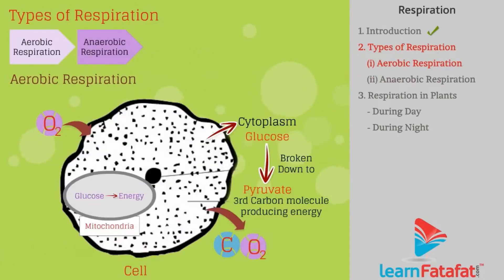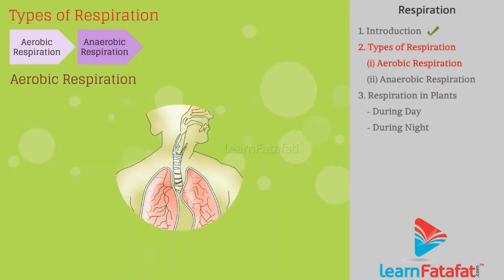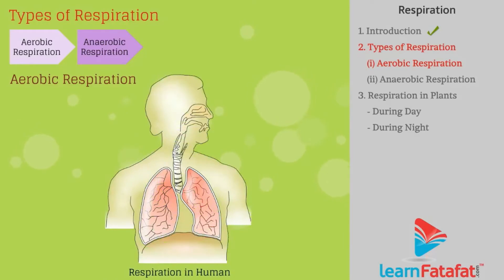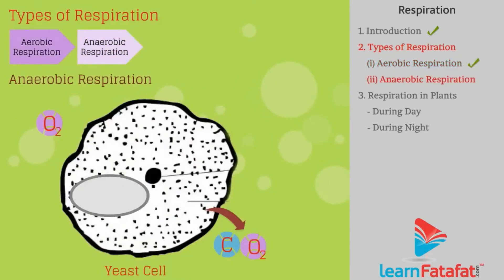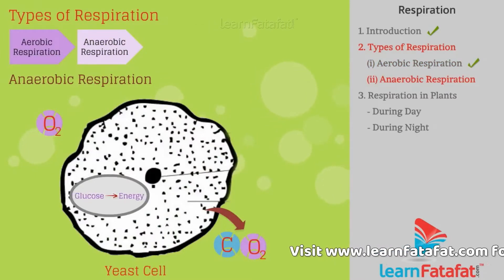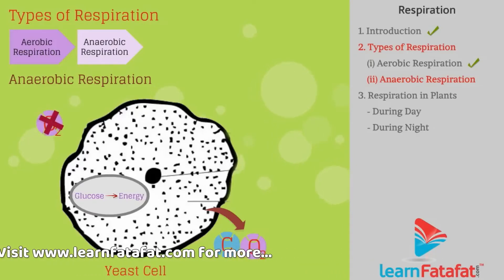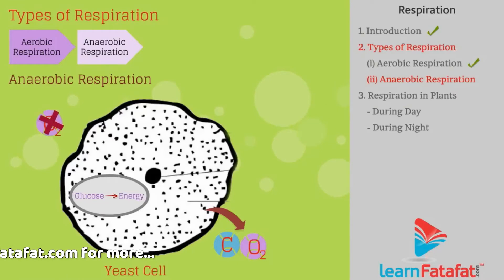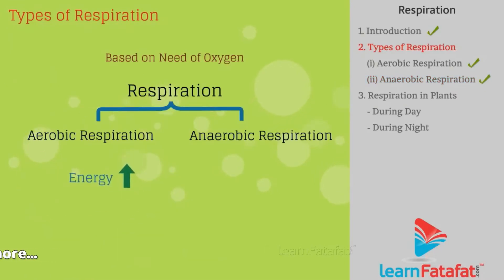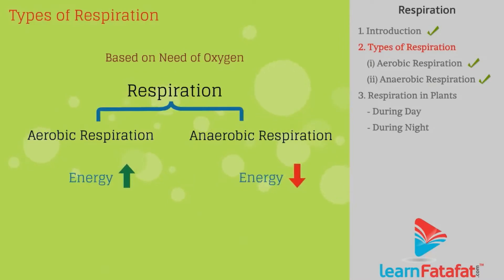In aerobic respiration, oxygen is used to break glucose into pyruvate in the mitochondria of the cell, producing energy. For example, respiration in humans. In anaerobic respiration, energy is produced from glucose without using oxygen. For example, yeast cells. Energy released in aerobic respiration is more than that released in anaerobic respiration.